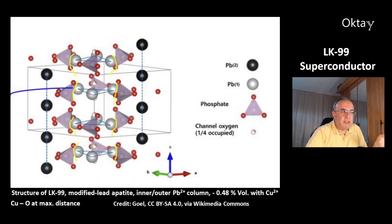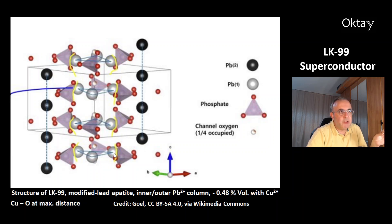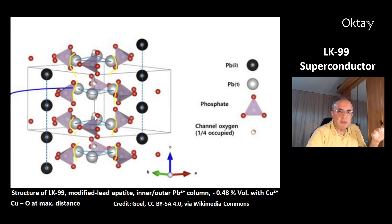This is the structure of LK-99, which is a modified lead apatite. On the other side there is a column structure. There are two kinds of lead ions: the outer lead ions shown in black, and in grey the inner lead ions, with phosphate ions between them. In the center there are oxide ions, but they occupy just one quarter of the available spots. The doping with copper causes a volume reduction of 0.48%.